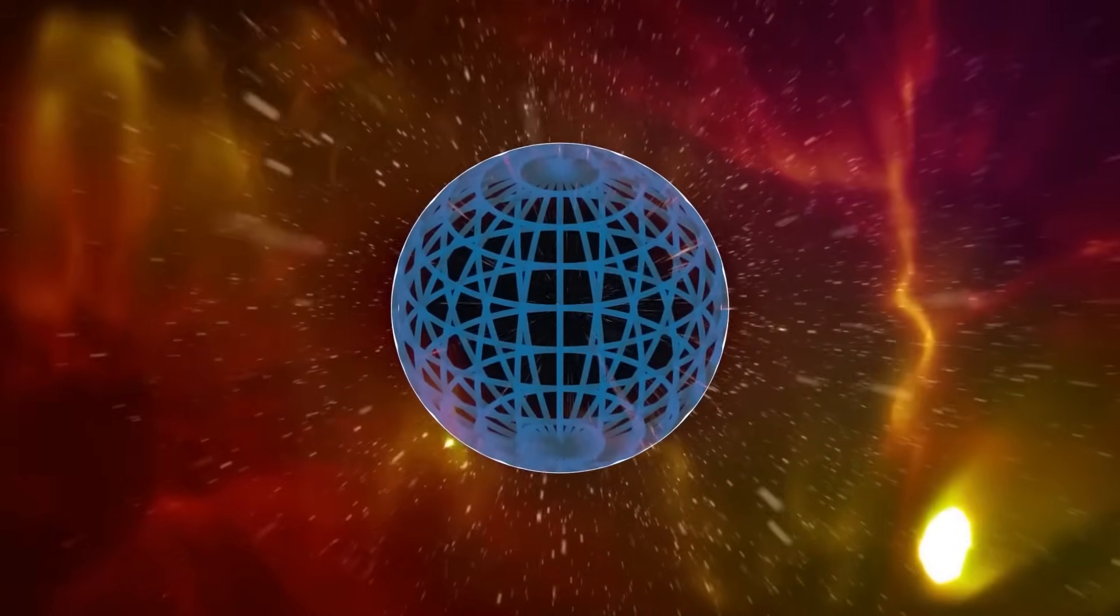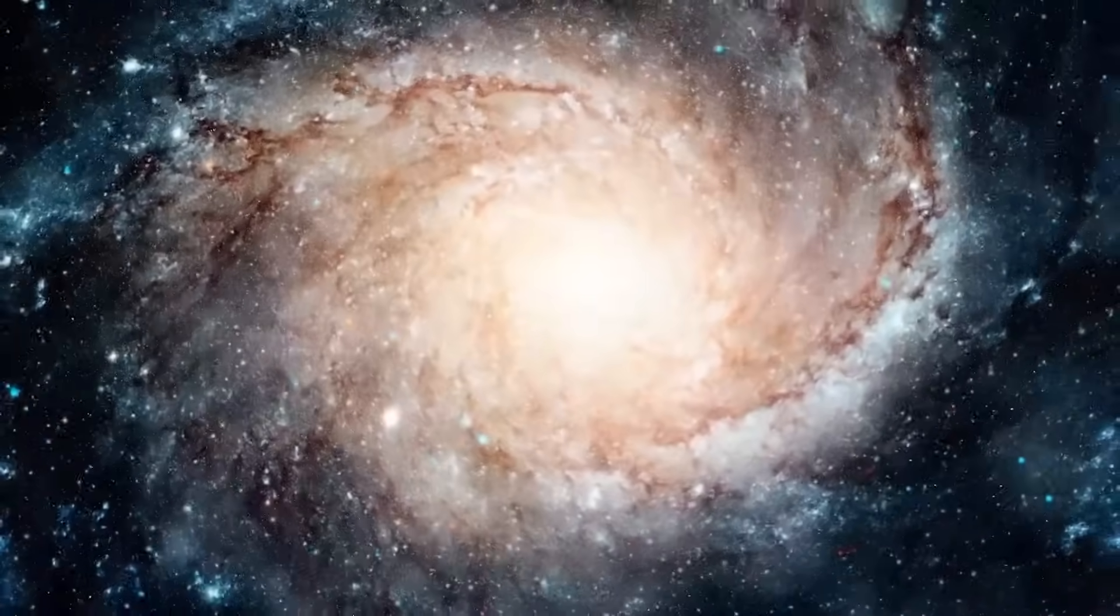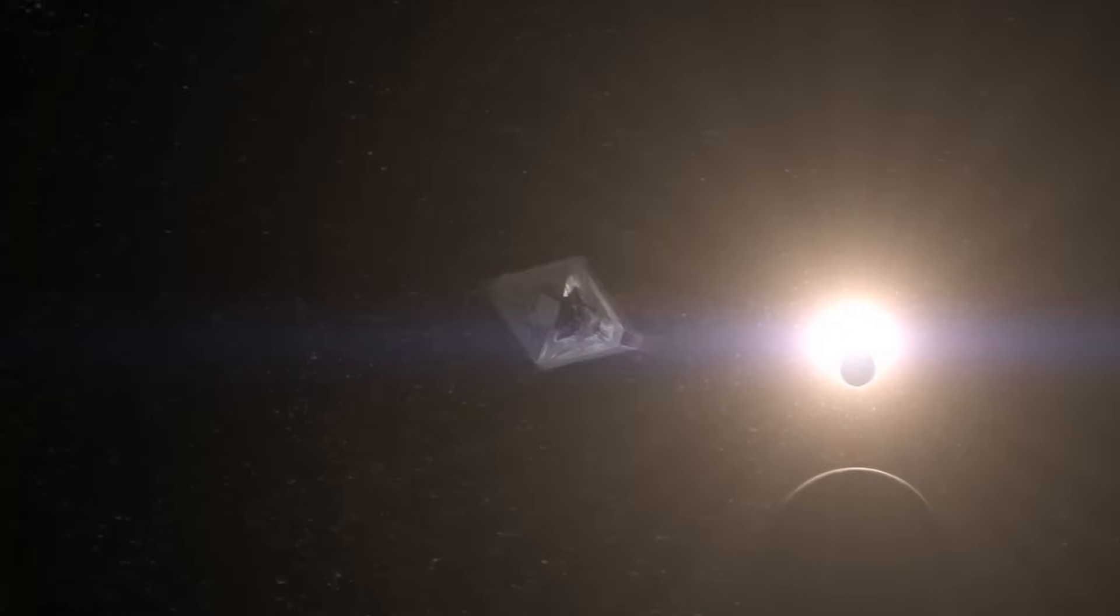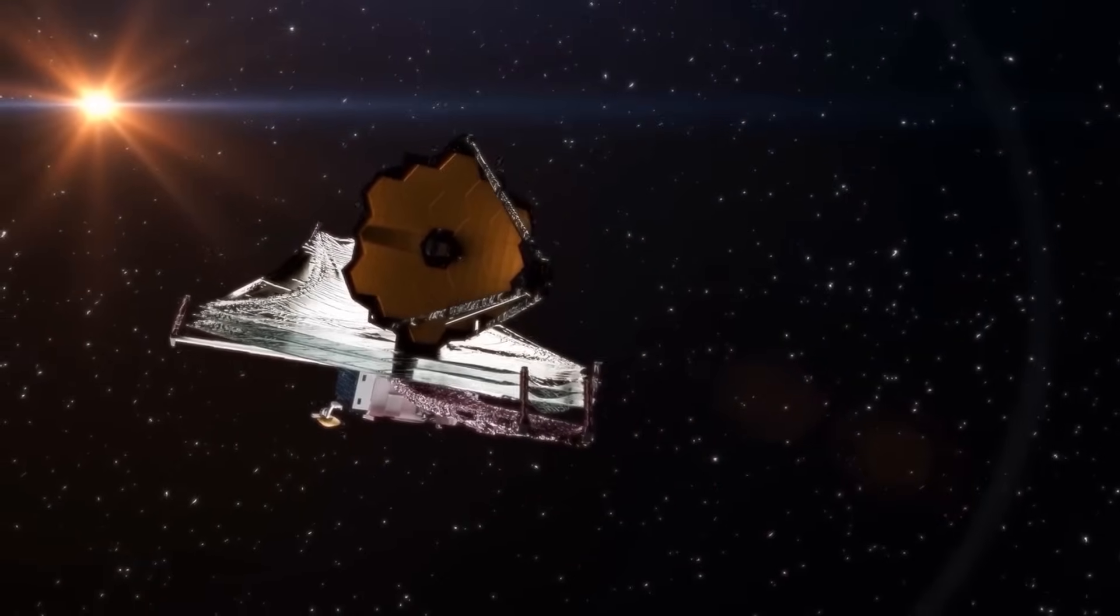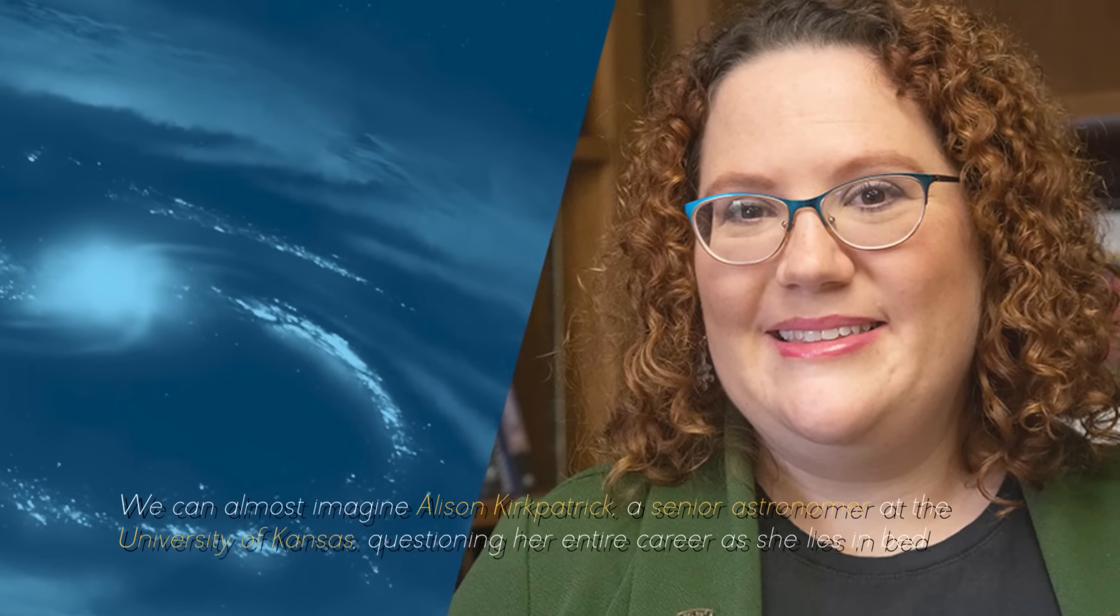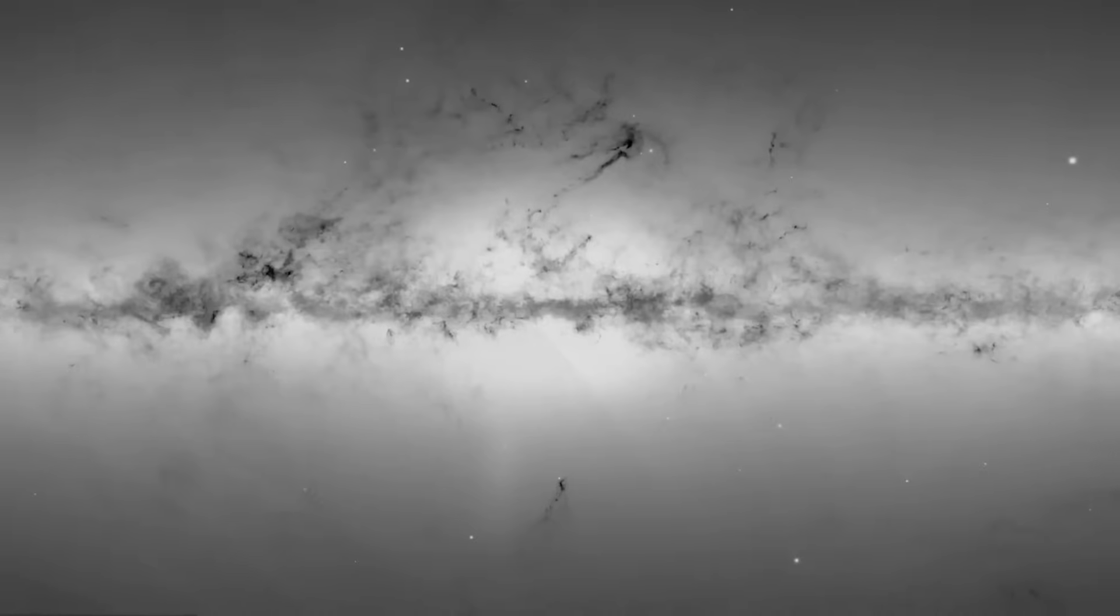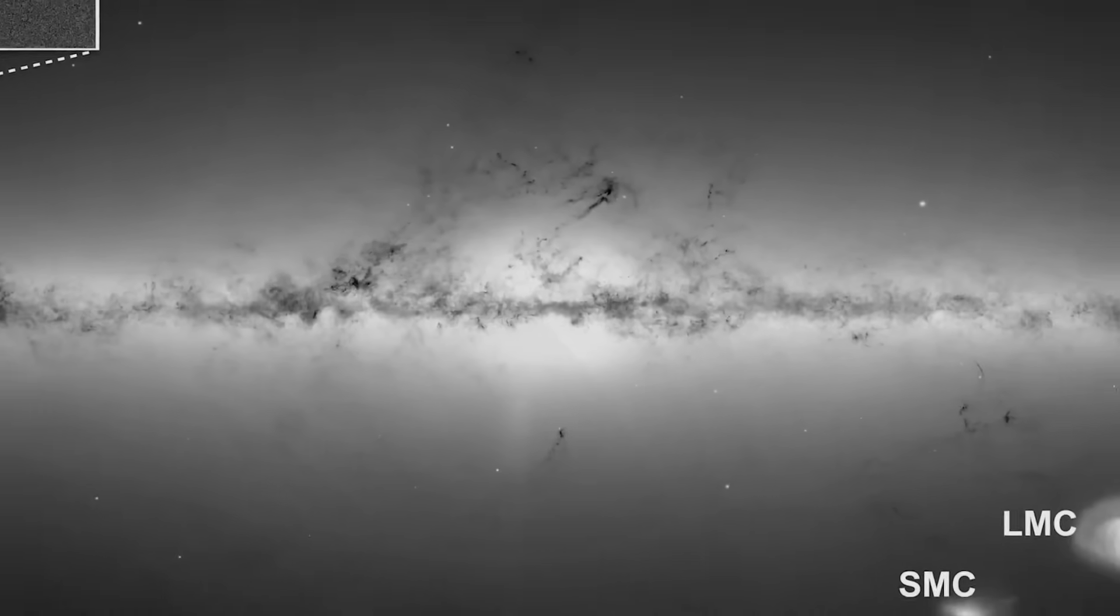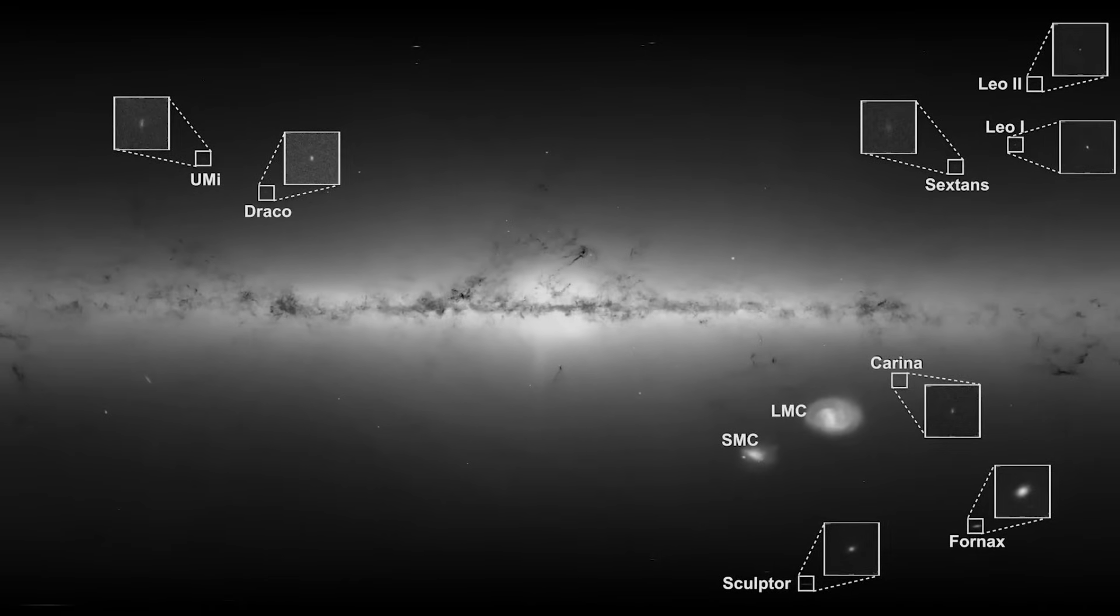The assumption being questioned is the idea that our universe originated through a massive explosion some 13.8 billion years ago and has been expanding like a giant balloon ever since. This theory has been central to our understanding of cosmology for decades. However, new observations made by the James Webb Space Telescope have cast uncertainty on its validity, generating an uproar in the scientific community. We can almost imagine Alison Kick-Partrick, a senior astronomer at the University of Kansas, questioning her entire career as she lies in bed. Why so much surprise?